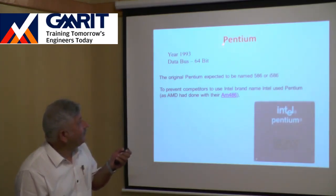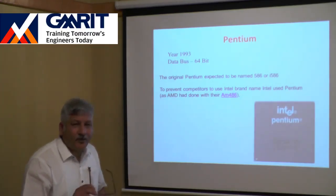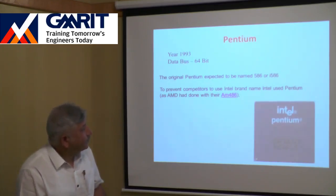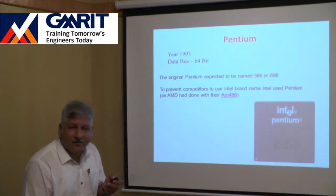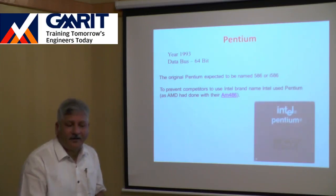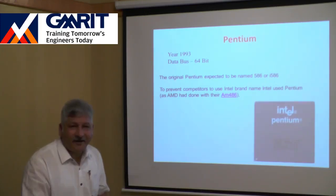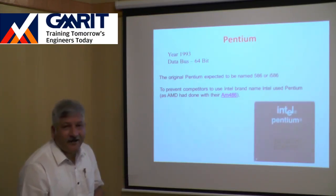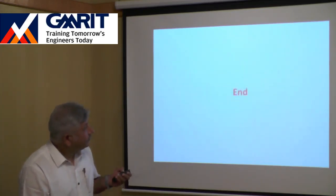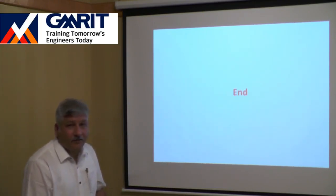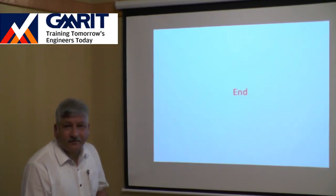Pentium came to market in 1993, and subsequently Intel launched Pentium 1, Pentium 2, Pentium 3, and so on. Since 'Pentium' is a registered trademark, no other company can use that name — whereas any company could have named their processor '586.' This is the history of the evolution of Intel processors.